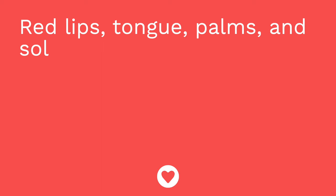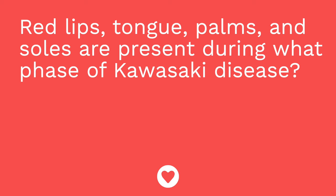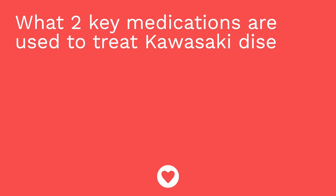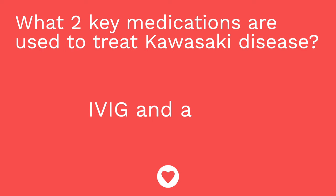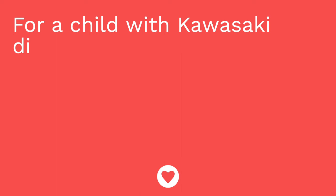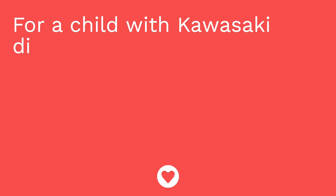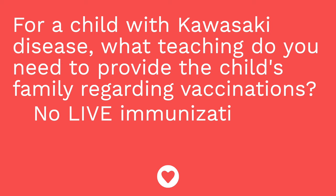It's time for a quiz. First question: red lips, tongue, palms, and soles are present during what phase of Kawasaki disease? The answer is the acute phase. Question two: what two key medications are used to treat Kawasaki disease? The answer is IVIG and aspirin. Question three: for a child with Kawasaki disease, what teaching do you need to provide the family regarding vaccinations? The answer is no live vaccines for 11 months.